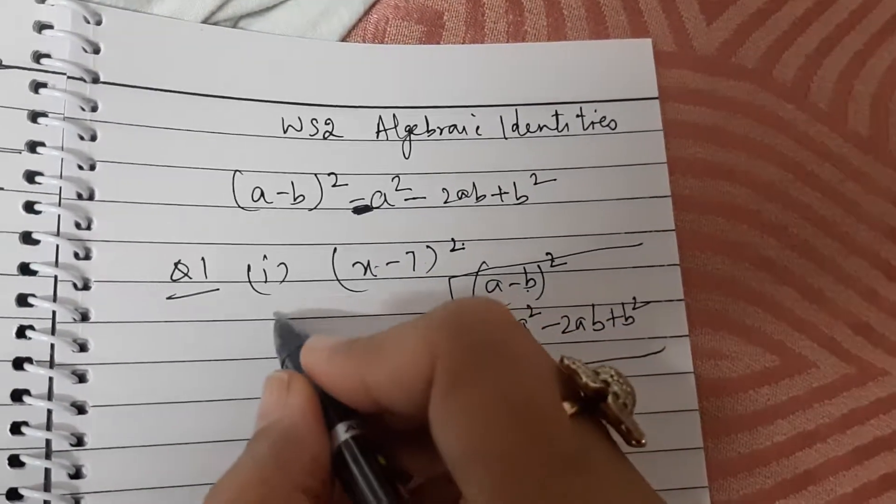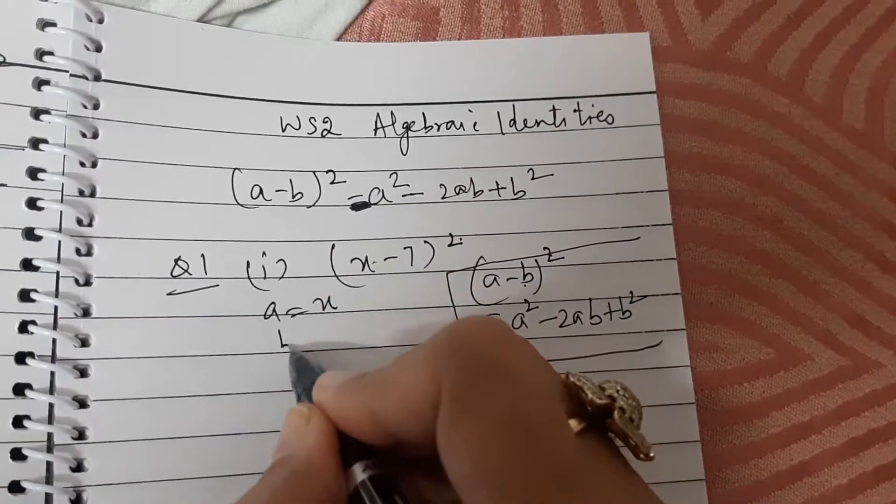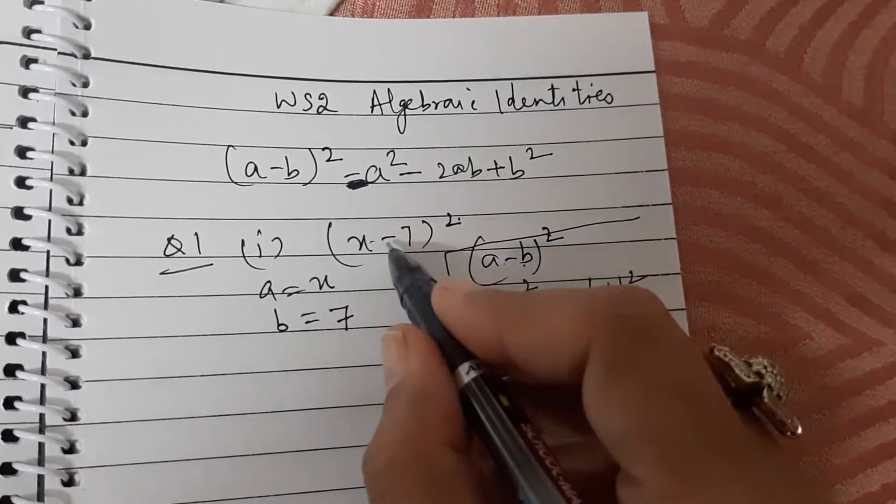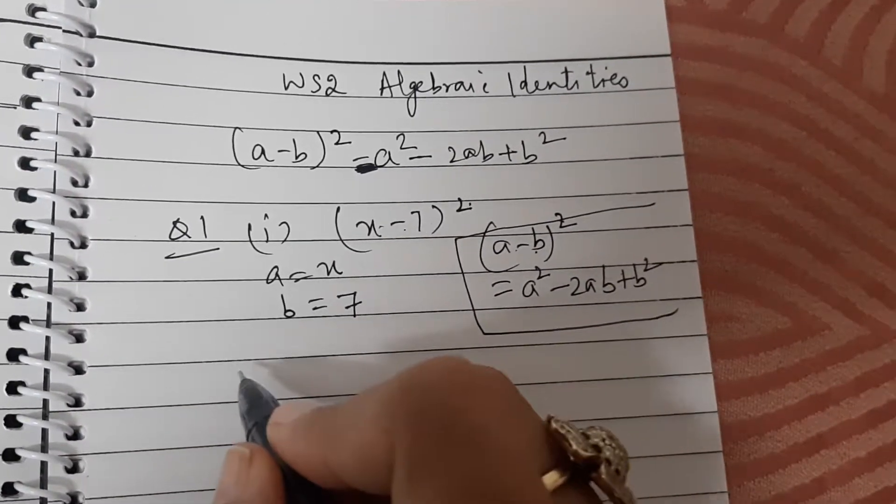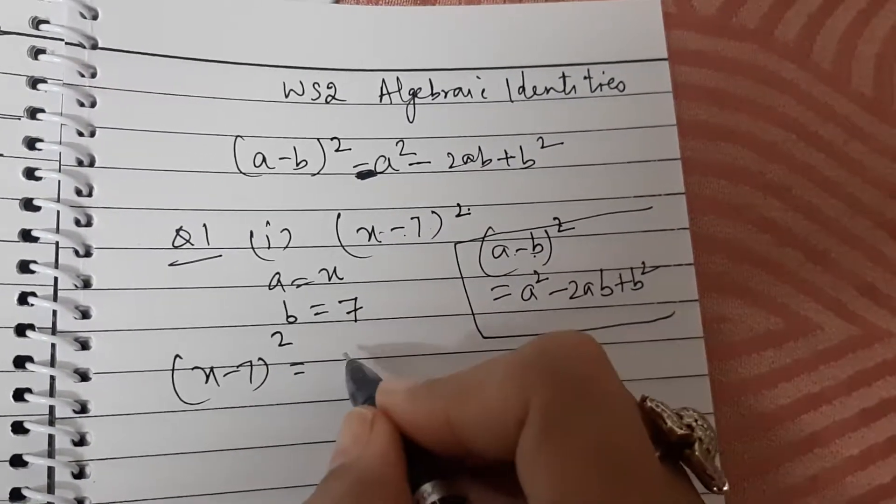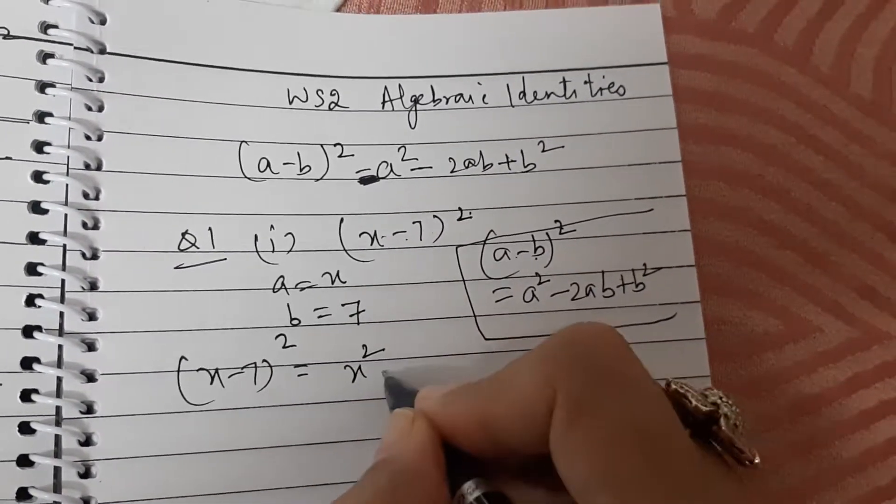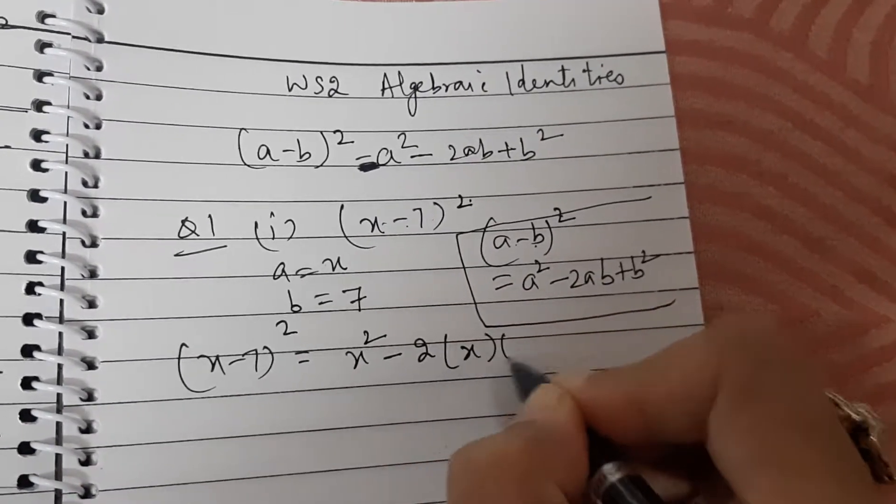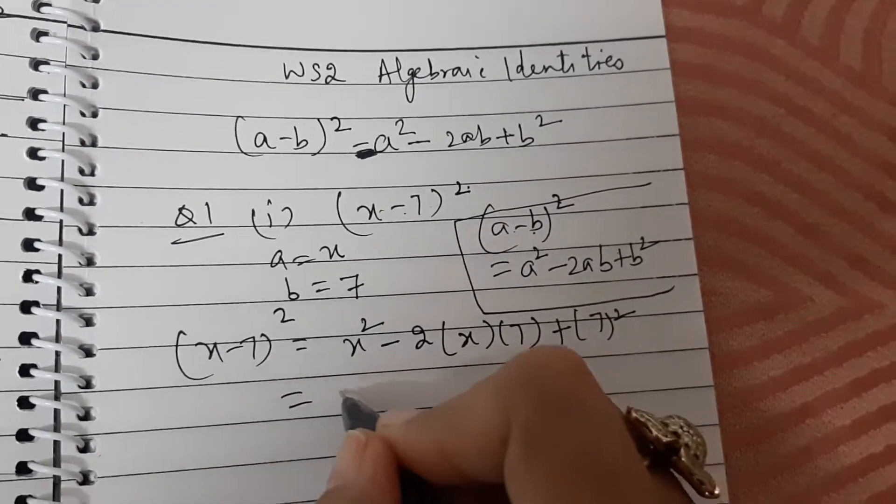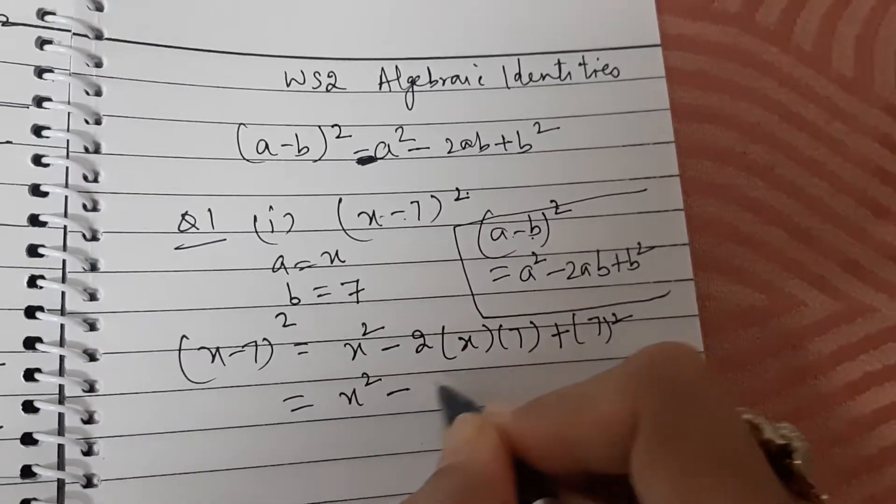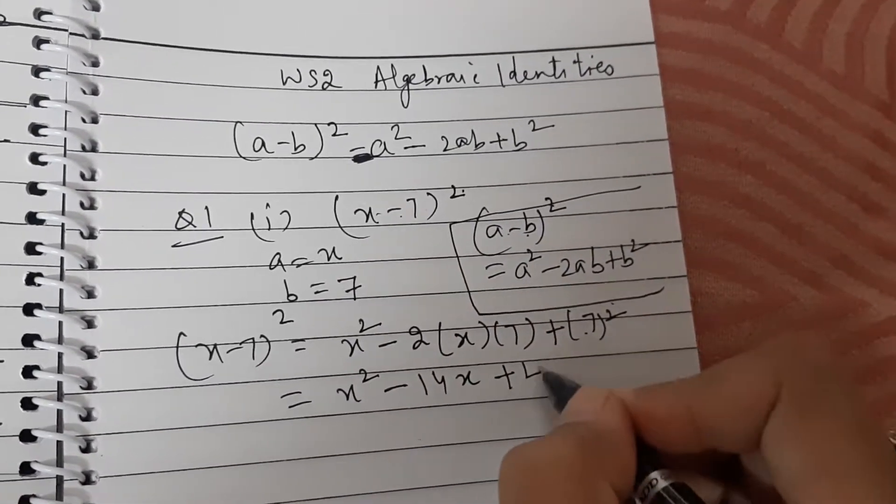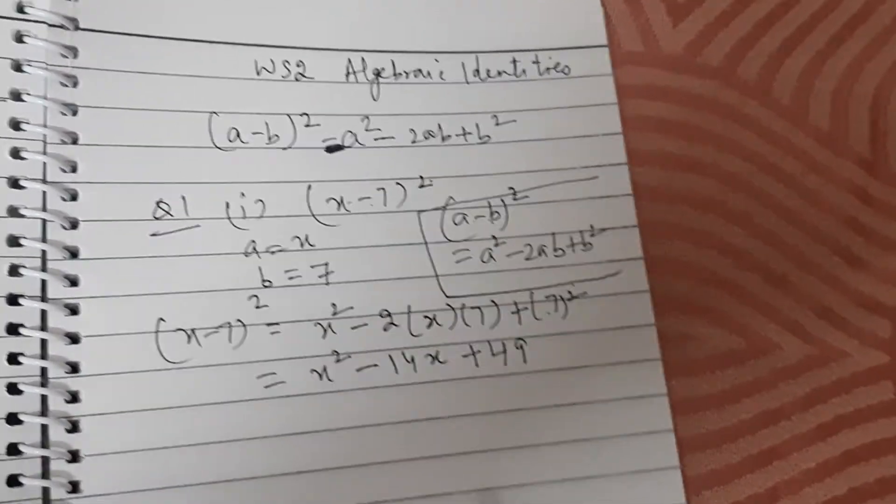What is a? a is x. And what is b? b is 7. And at the place of minus we have minus sign. So what will be x minus 7 whole square? It will be equal to x square minus 2 into x into 7 plus 7 square, which is equal to x square minus 14x plus 49. So this is the answer. Isn't it simple?